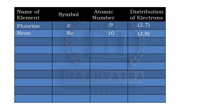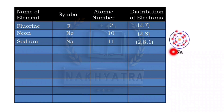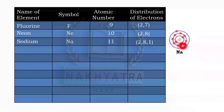Neon has atomic number 10 with distribution 2,8 — two electrons in the first cell and eight in the second cell. Sodium has atomic number 11 with distribution 2,8,1. The first cell has two electrons, the second cell is filled with eight electrons (its maximum), and the remaining one electron moves to the third cell. Magnesium has atomic number 12 with distribution 2,8,2 — two in the first, eight in the second, and two in the third cell.